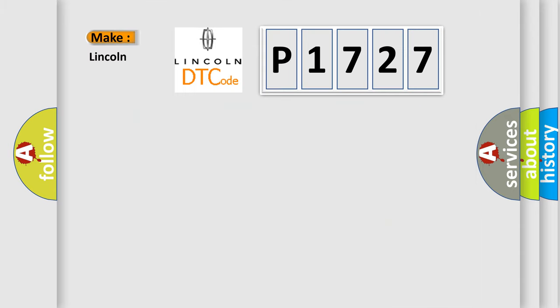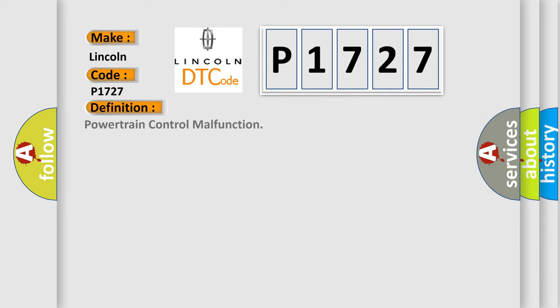So, what does the diagnostic trouble code P1727 interpret specifically for Lincoln car manufacturers? The basic definition is Powertrain control malfunction.